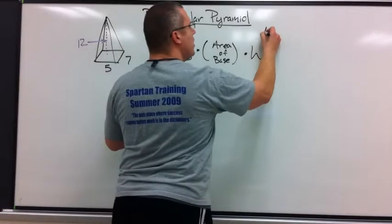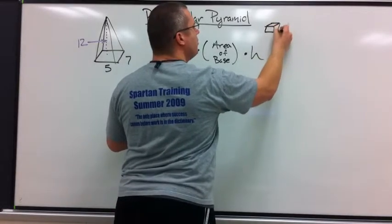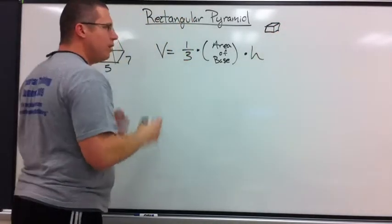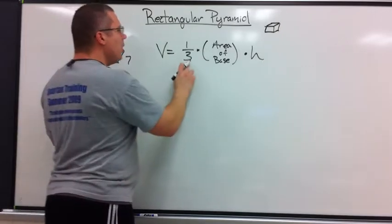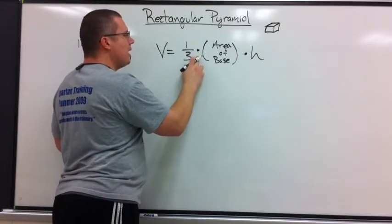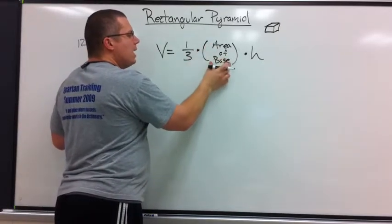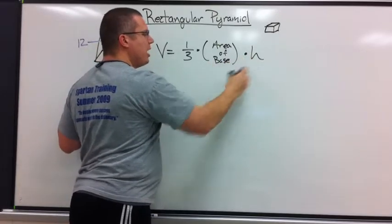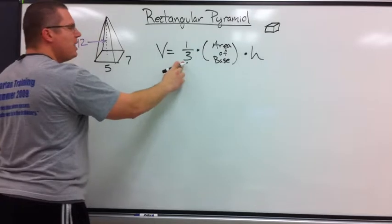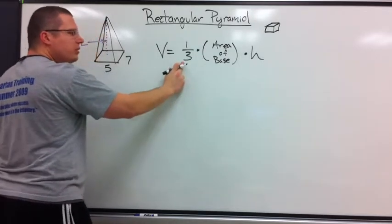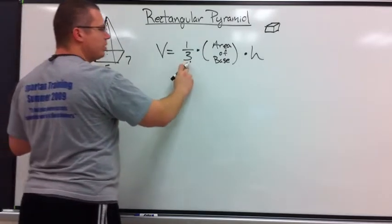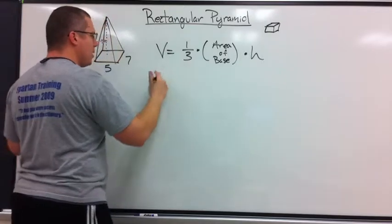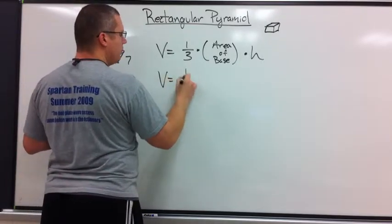V, volume. Remember volume? We are counting the number of cubes that fit in an object. Filling the object up. 1/3, 1 over 3 times area of the base, and I'll get to that in a second, times the height. Now the 3 shouldn't be that strange to us because triangles have 3 sides, so it makes sense that that fits in somehow.